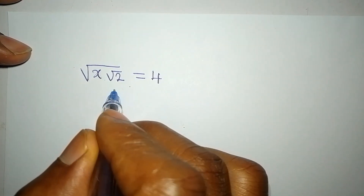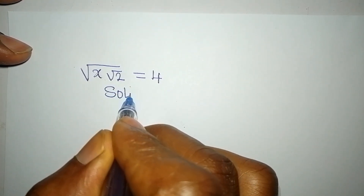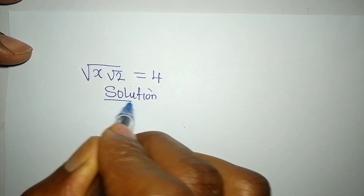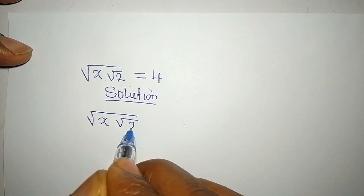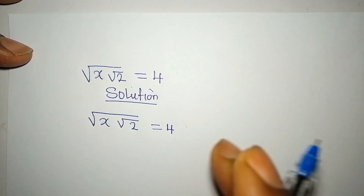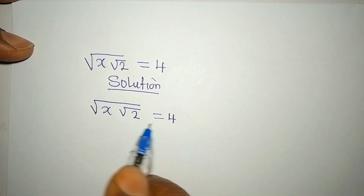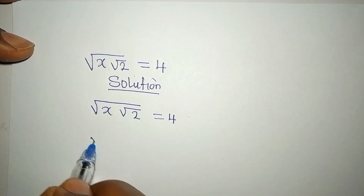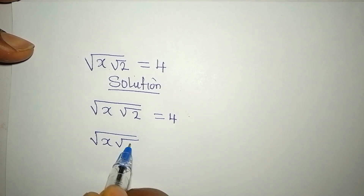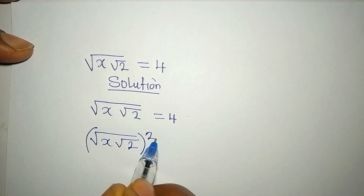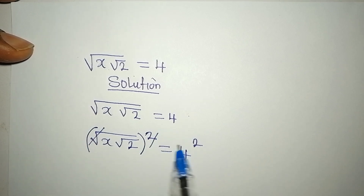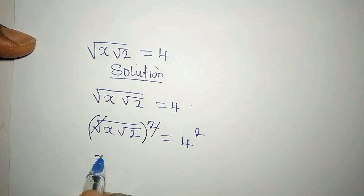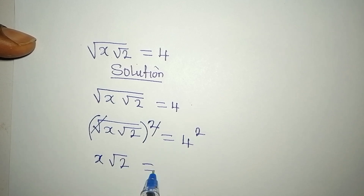Hello everyone, let's solve the equation square root of x square root of 2 equals 4. The first thing we do is square both sides, so we have square root of x square root of 2 to the power of 2, equal to 4 to the power of 2. The square root and the square cancel each other, so we have x root 2 equal to 16.